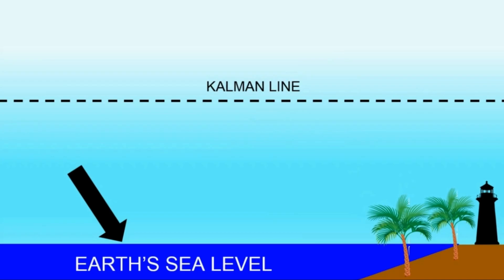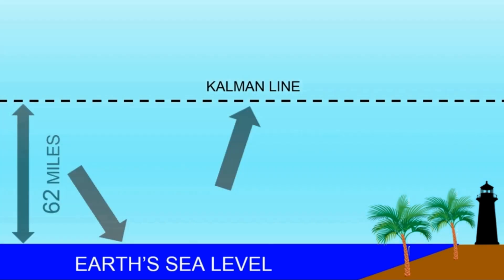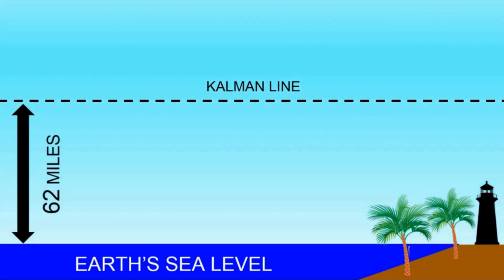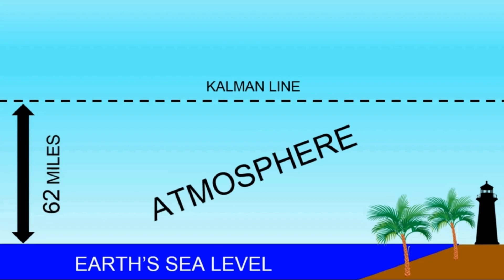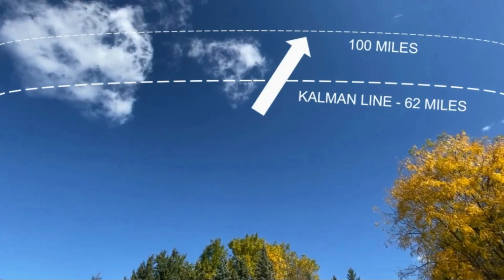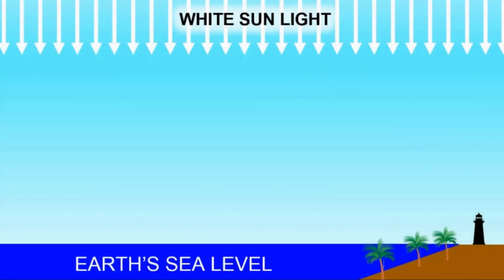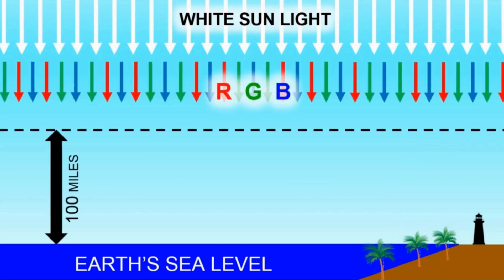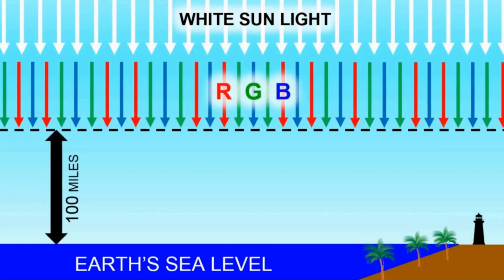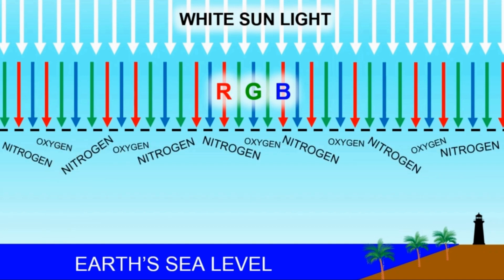Here's Earth's sea level, and there's an imaginary line called the Karman Line. It's 62 miles high, and everything in between is defined as atmosphere. The sky's color blue starts even higher, at 100 miles. As white sunlight approaches the Earth, we can break it down to RGB. When it reaches roughly 100 miles above sea level, it runs into nitrogen and oxygen.